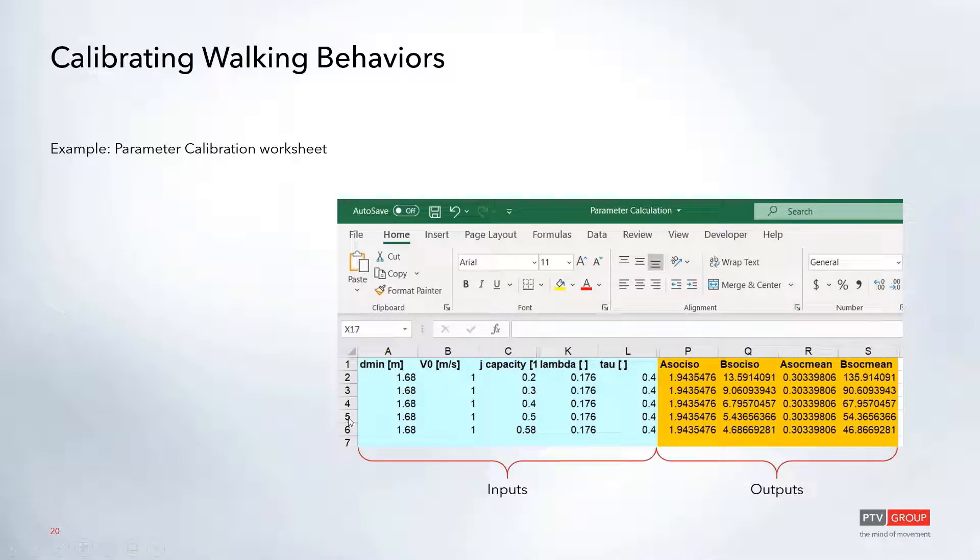On the left side, you can enter in the desired minimum distance in meters, the average walking speed, the estimated capacity, and then your calibrated lambda and tau values, which are other walking behaviors. By inputting these, it will output suggestions for starting points for your calibration. You still might need to do some refinement depending on the data, but these are good starting points. That way you don't have to do as much trial and error.